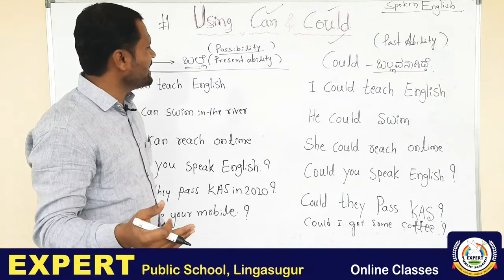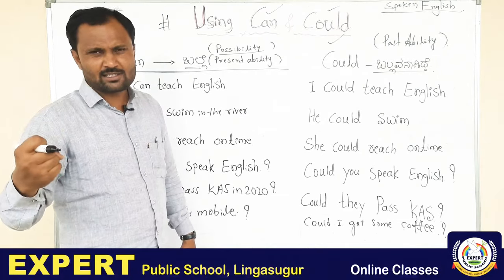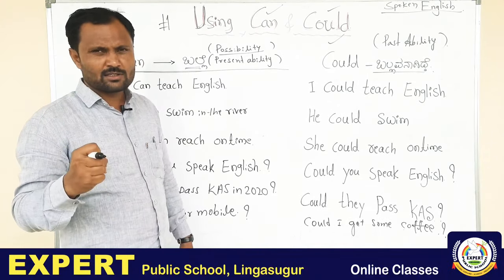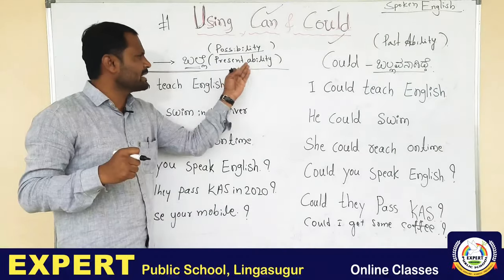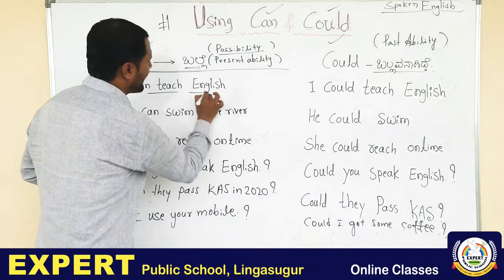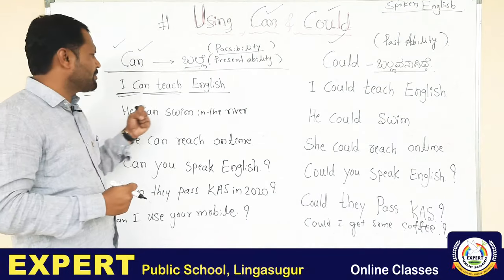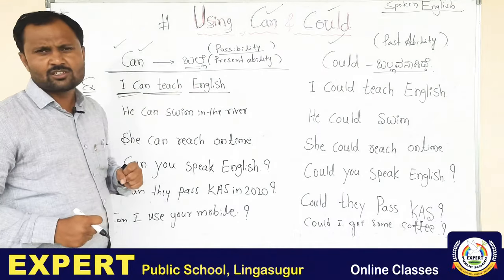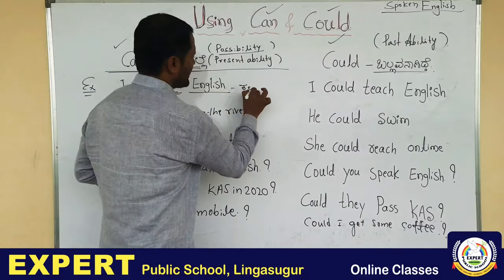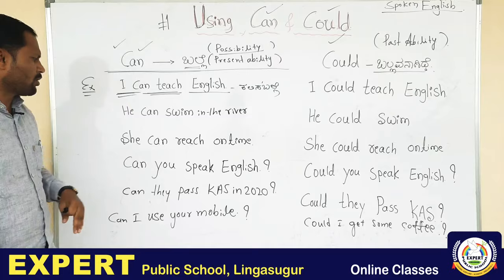Possibility means you are able to do it. For example: I can do it, I can pass, I can sing, I can jump, I can get it, I can get 100 marks. So 'can' is used for present ability. Example: I can teach English — meaning I am able to teach English.